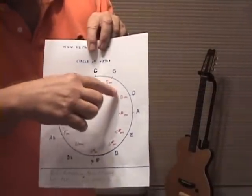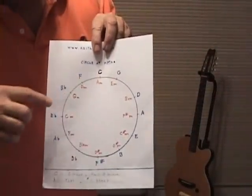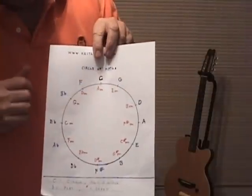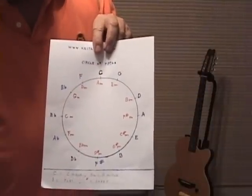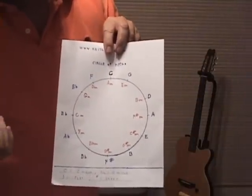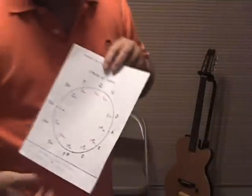On the smaller side you have A, E, and B with an M, which is A minor, E minor, and B minor — or C minor, whatever you like.